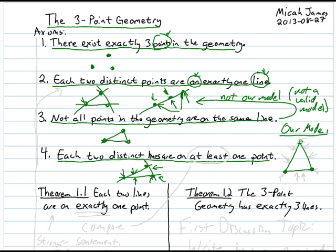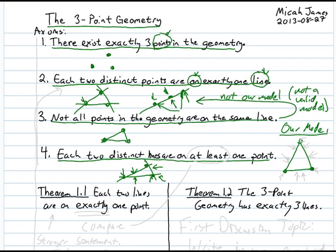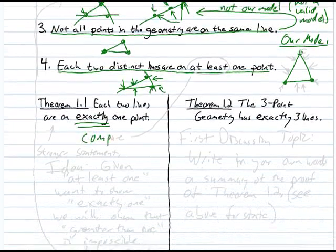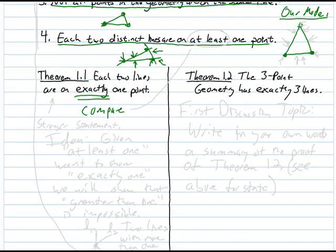Let's move on to our first theorem. Axioms 1 through 4 are things we agree are true — they define the three-point geometry. Theorem 1.1 claims that each two lines are on exactly one point. Compare this to axiom 4, which says at least one point. This is a stronger statement: while axiom 4 says two distinct lines meet at at least one point, theorem 1.1 says there is exactly one point in common.